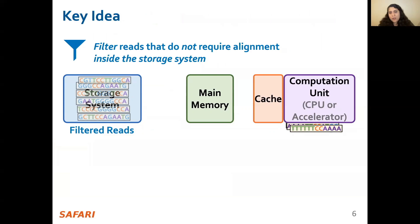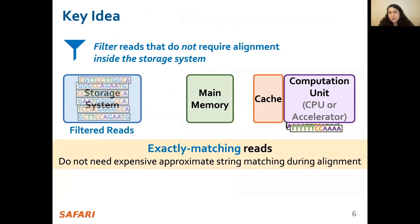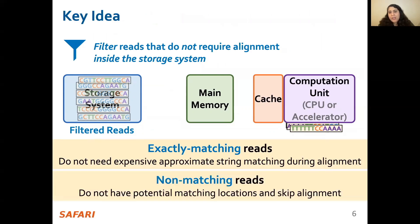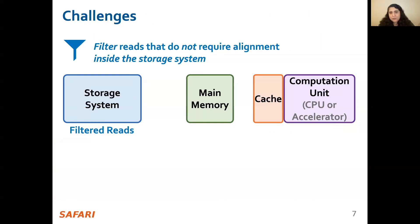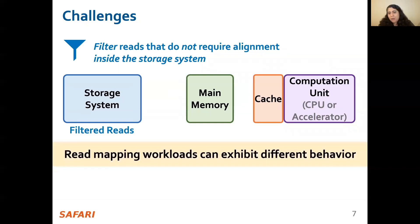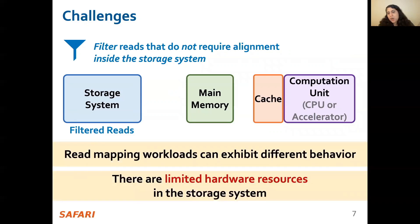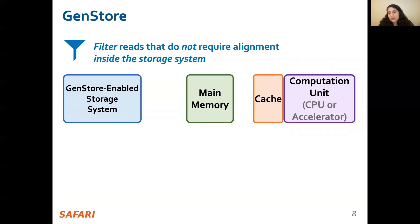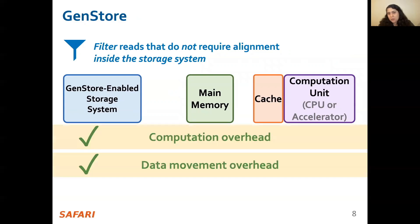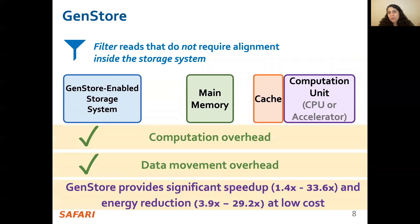Examples of reads that do not require the costly alignment step are exactly matching reads to the reference genome that do not need approximate string matching performed during alignment, and non-matching reads that have no potential matching locations in the reference genome and hence skip the alignment step. However, filtering reads in a modern SSD can be challenging due to different behavior across readmapping workloads and the limited hardware resources in the SSD. By addressing these challenges, we propose GenStore, the first in-storage processing system designed for genome sequence analysis to reduce both computation and data movement overhead. GenStore provides high performance and energy benefits compared to state-of-the-art hardware and software baselines.